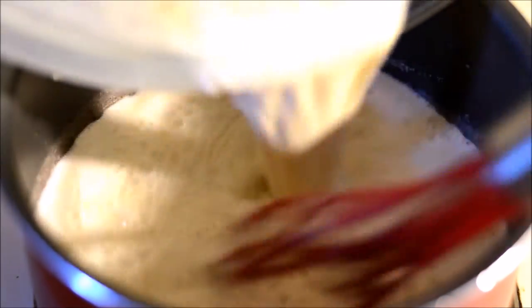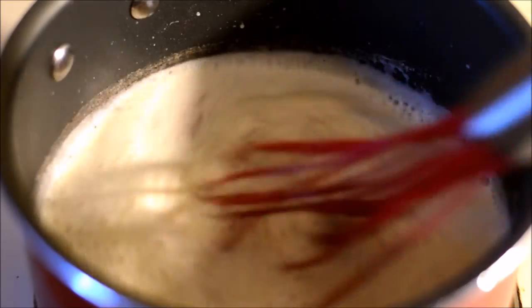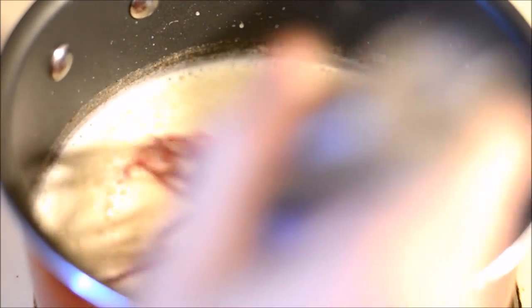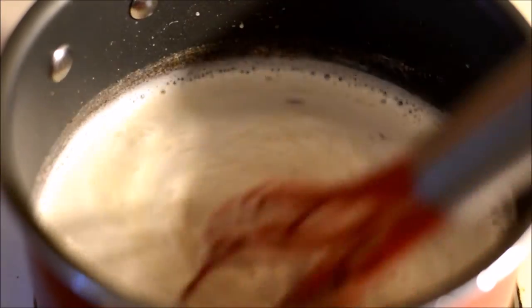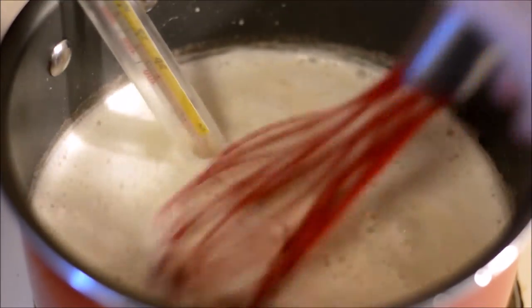Once most of the cream mixture has been added to the egg yolk mixture, pour this new mixture into the rest of the pot of cream mixture and whisk constantly until this mixture has reached 160 degrees. I like to use my candy thermometer to know when it is 160 degrees.